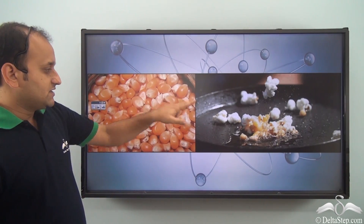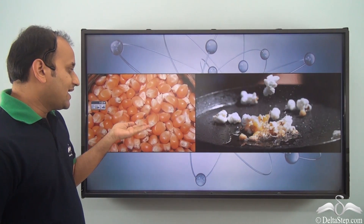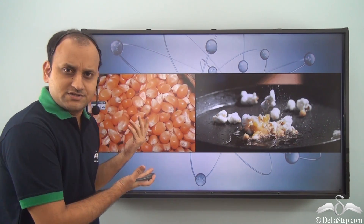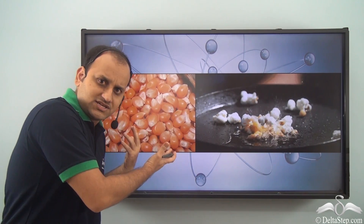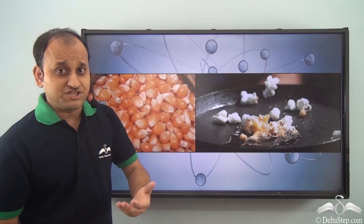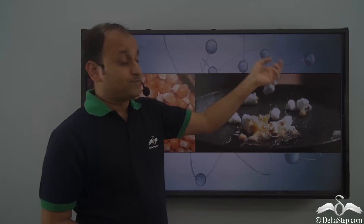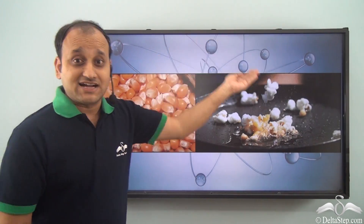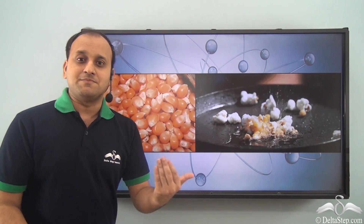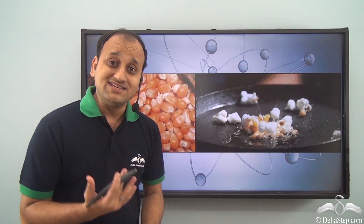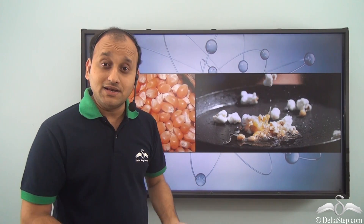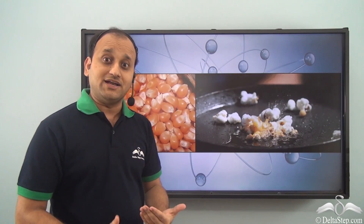Now what do we see here? Two images. One has corn seeds. Now in this case the corn seeds are dormant — do you see any reactions in the corn seed? No. But the same corn seed on heating, that is on change of condition, reacts differently. So the same corn seed reacts differently under a different condition. Now a similar thing happens with a nucleus.